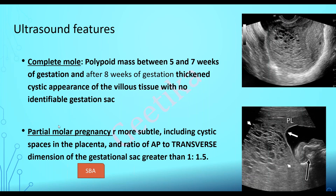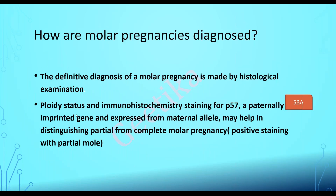The definitive diagnosis is made by histological examination, ploidy status, and immunohistochemistry staining with P57 — a paternally imprinted gene expressed from the maternal allele. Partial mole gives positive staining with P57, whereas complete mole gives no staining. Ploidy: complete moles are diploid and partial moles are triploid. This is how we differentiate partial mole from complete mole.